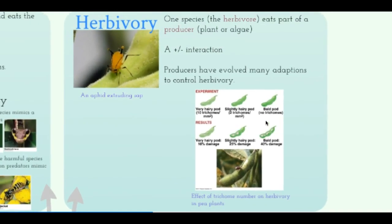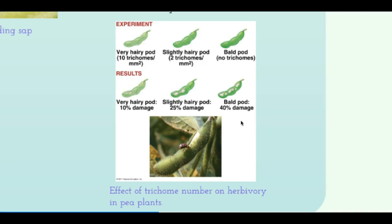Herbivory is also a plus-minus interaction — one benefits, one gets harmed. For example, aphids feed on plant sap. An experiment on bean pods showed that very hairy pods received only 10% damage from aphids, slightly hairy pods received medium damage, and bald pods received 40% damage. This tells us that the evolutionary development of hairy pods or leaves helps plants prevent herbivores from eating them.